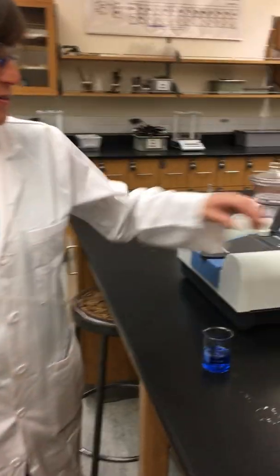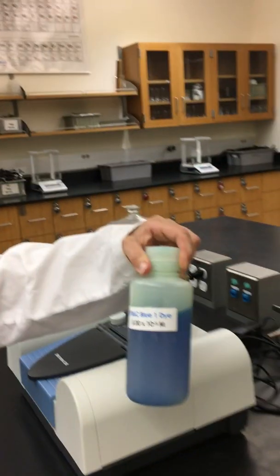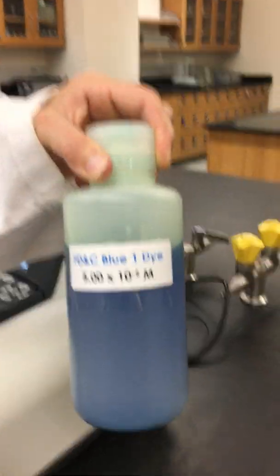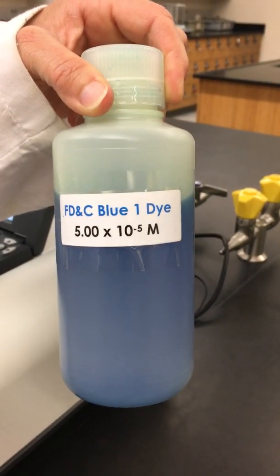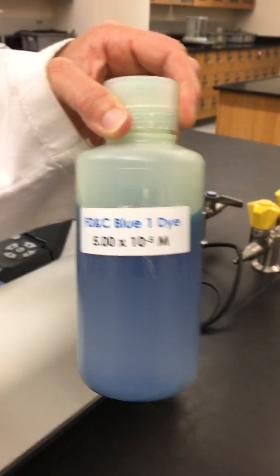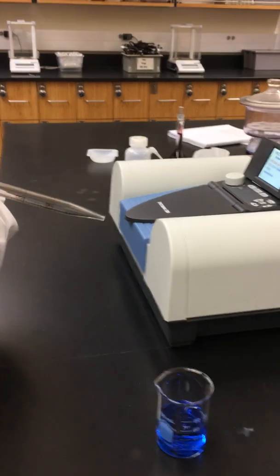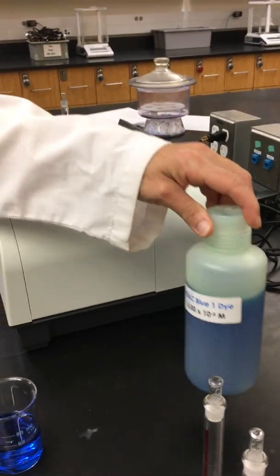We have FD&C Blue Dye number 1, and the concentration of the stock solution is 5.00 times 10 to the negative 5 molar concentration. So I've poured this into a beaker because remember we never want to put pipettes or things into our source container.